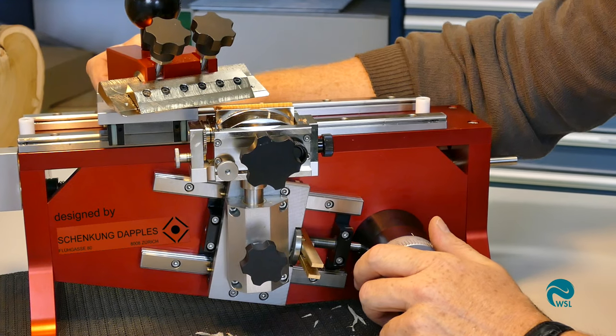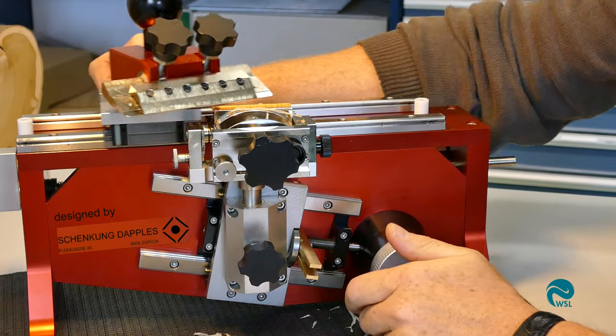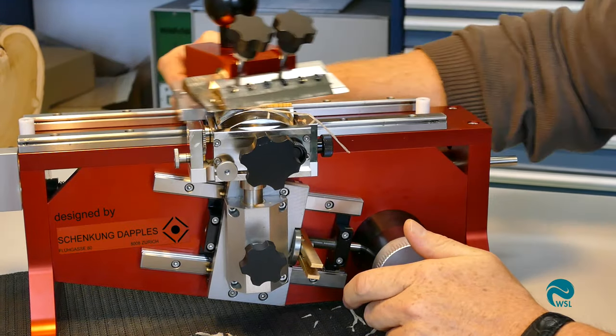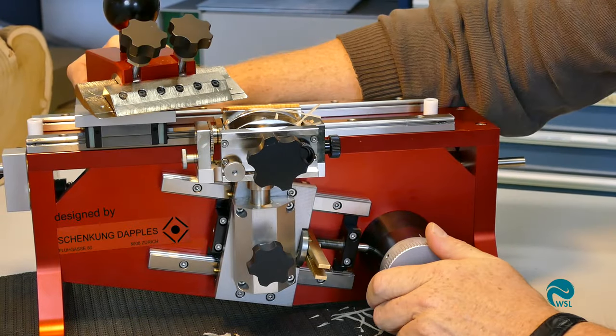First, you need to obtain a perfectly continuous surface on the top of the sample. To achieve this, the sample needs to be raised in steps of 20 to 30 microns and planed with the blade.